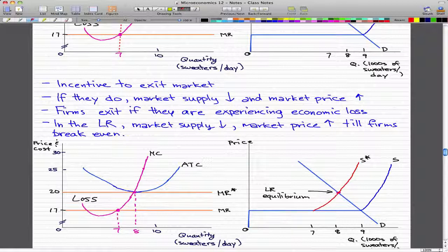So basically, in the long run, the market supply decreased and market price increased. Some firms decide to leave the bandwagon and some decide to stay in the game to keep up producing. And at the end, the market price rises until the firms make zero economic profit.